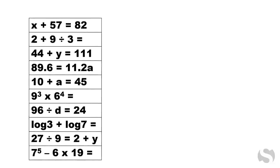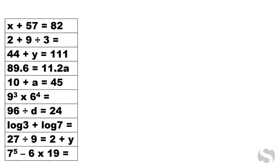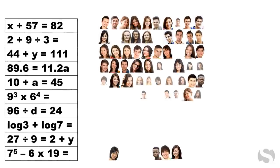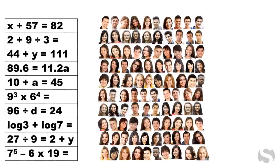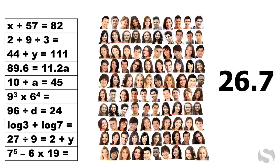Let's say the developer gives the math test to 116 year olds in the norming sample. The scores of all of those 16 year olds are folded together into an average, or mean, which may be 26.7 correct answers out of 40 problems.